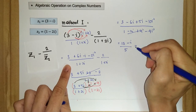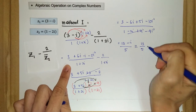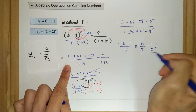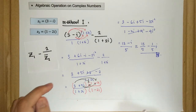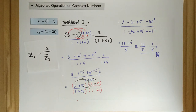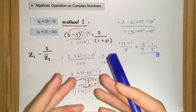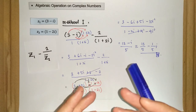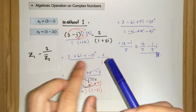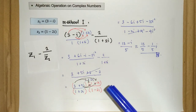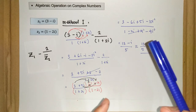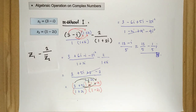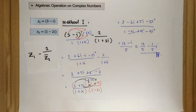This is our answer, which can also be written in standard form. To conclude Method 1: first, we merged the fractions into one single fraction by making the denominators equal and simplifying. Then we rationalized the denominator using its complex conjugate. Hope this video helps you in understanding and solving this combination of algebraic operations on complex numbers. See you in the next video. Bye-bye.